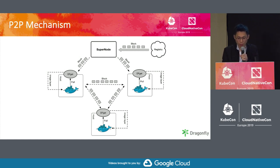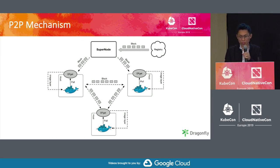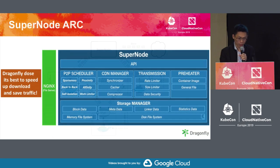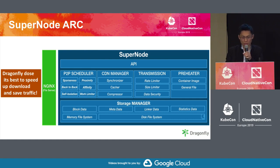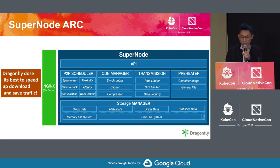Now let me introduce the core architecture of Dragonfly — specifically the SuperNode architecture. SuperNode is mainly composed of five modules: P2P scheduler, CDN manager, transmission controller, data pre-fetcher, and storage management.